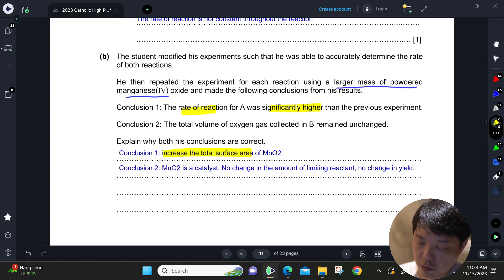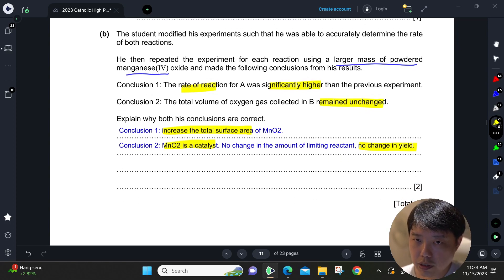For B, the total volume of oxygen gas collected remains unchanged. So we know that manganese dioxide is actually a catalyst, so there is actually no change in yield. That's the difference between the two.